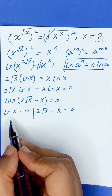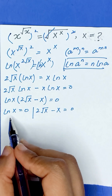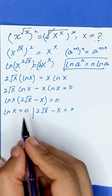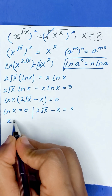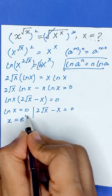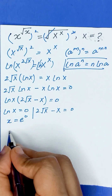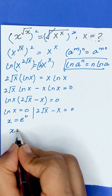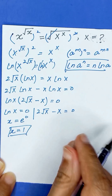Since log functions are the inverse of exponential, ln of x equals 0 means x is equal to e to the power 0, and e to the power 0 is equal to 1. So the value of x is equal to 1 in this case.